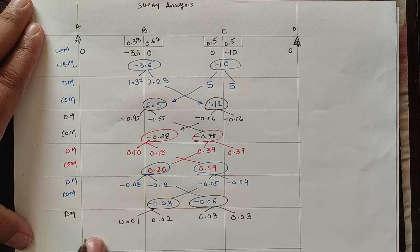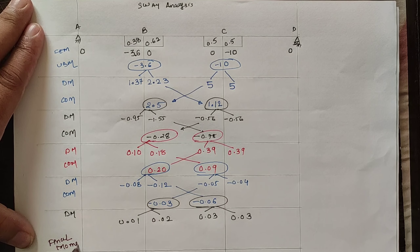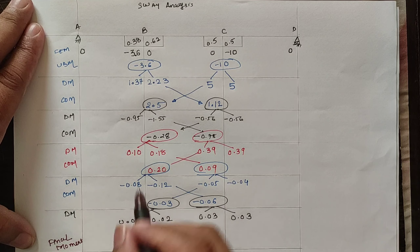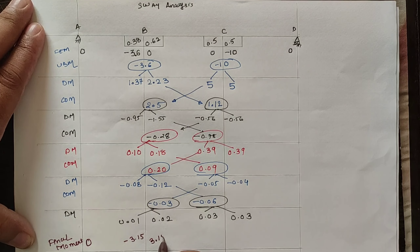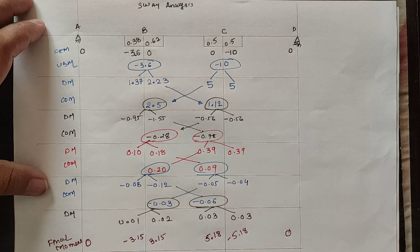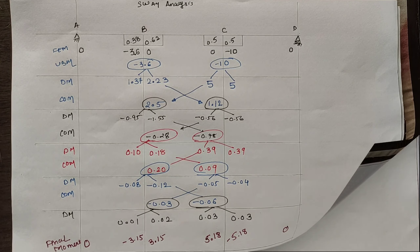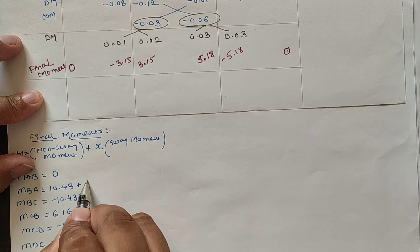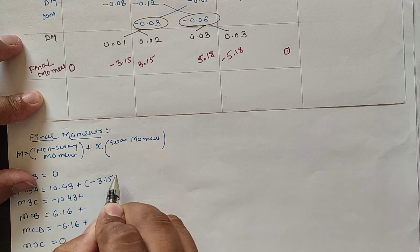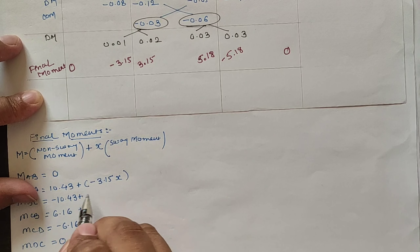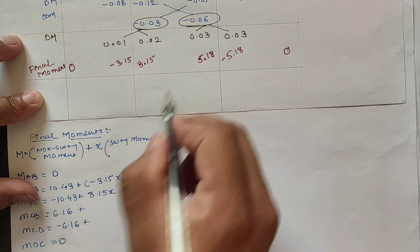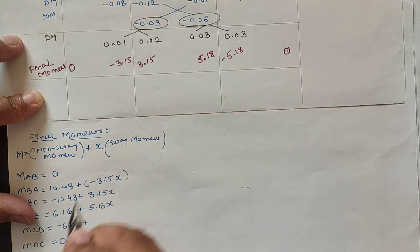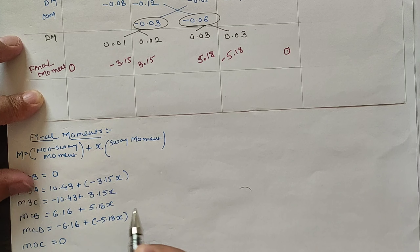At each distributed moment, values are near to 0.1 or less than 0.1, hence our final sway moments are the summation of each column. Replacing the sway moments in the equation: for MAB the value is 0, for BA span the value is minus 3.15 into X correction factor, for BC span the value is 3.15 × X, for CB span our value is 5.18 × X, and for CD span the value is minus 5.18 × X.